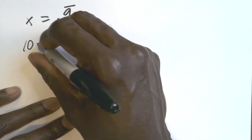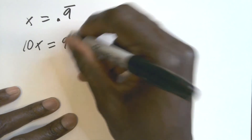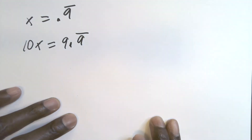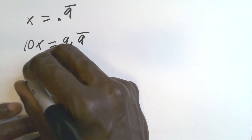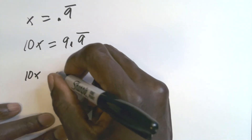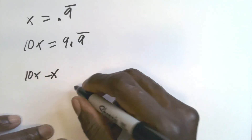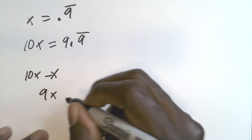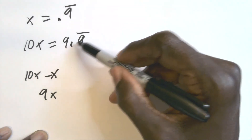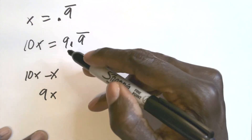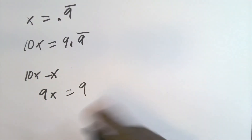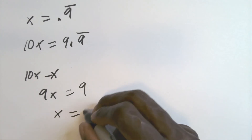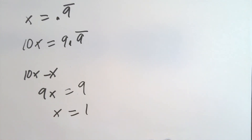If x = 0.9 repeating, then 10x = 9.9 repeating. That means 10x − x = 9x = 9.9 repeating − 0.9 repeating = 9. Therefore x = 1. Once again, x equals 1.